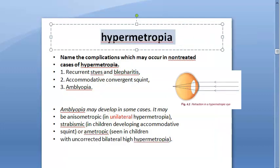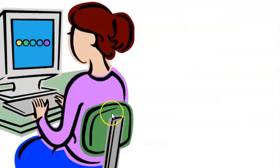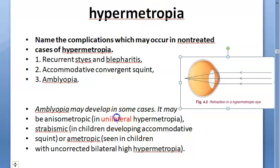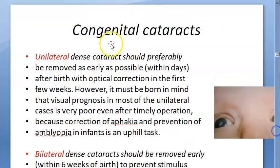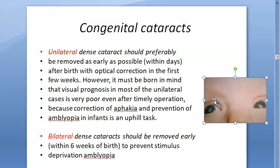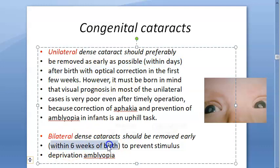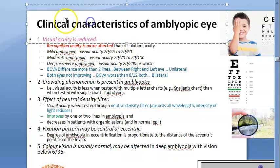Hypermetropia is very important: if there is unilateral hypermetropia — that is anisometropia — the patient is more prone to developing amblyopia than myopics. Regarding congenital cataract: light itself will not reach, so stimulus deprivation amblyopia develops. That is why congenital cataracts — unilateral or bilateral — should be treated within six weeks of birth, to prevent stimulus deprivation amblyopia.